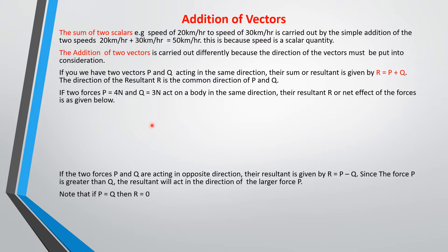So when we talk about addition of vectors, how do you add vectors? In our introductory class on vectors and scalars, we said that for scalar quantities you just add them normally — algebraically. Like if you have a speed of 20 kilometers per hour and a speed of 30 kilometers per hour, for scalar quantities you just add them: 20 plus 30 gives you 50 kilometers per hour. This is because speed is a scalar quantity.